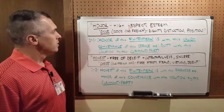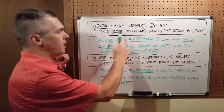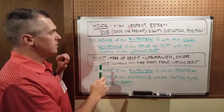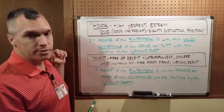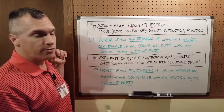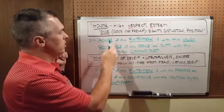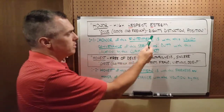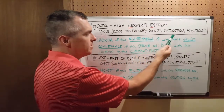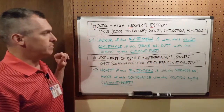Now Google defines honor as high respect, esteem. It comes from the 1200s, an old French word 'onur' or 'honor,' which means dignity, distinction, position.